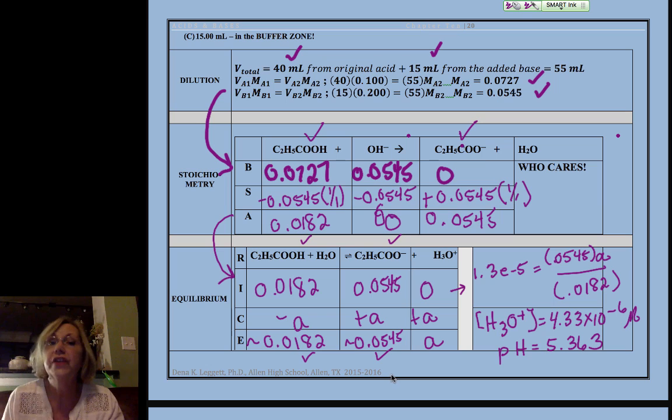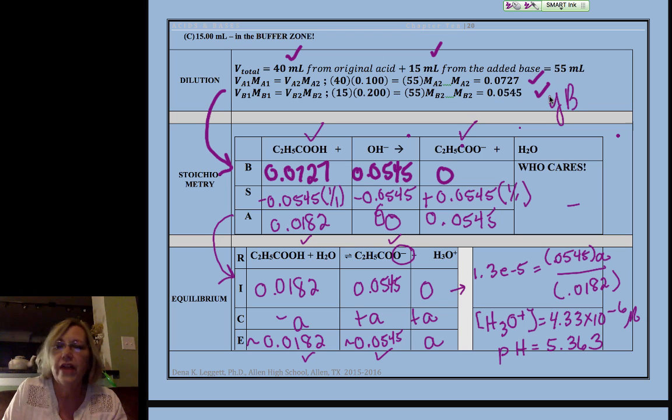All right, so our next calculation is probably the hardest on a titration curve, and that's the equivalence point. So don't miss out on that one. Until then, this is signing off. Thanks.